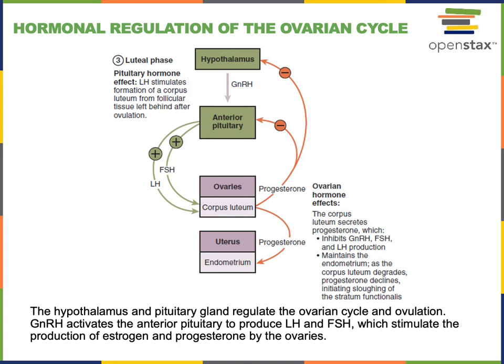Progesterone binds to receptors within cells all throughout the body. In the uterus, this helps to maintain the endometrium and stimulate the secretion of the uterine glands. In the hypothalamus and anterior pituitary, progesterone has a negative feedback mechanism to decrease the production of GnRH, LH, and FSH.